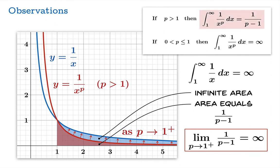Whenever p is greater than 1, you get a finite area. But if you let p sneak up to 1, that area in the limit diverges to infinity — exactly what you get when p equals 1. So you should see how all these results fit together quite nicely.